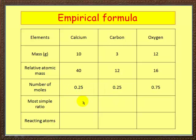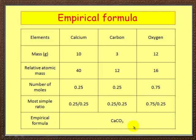Most simple ratio divided by the smallest. Either of those two do. So we've got 0.25 over 0.25, 0.25 over 0.25, 0.75 over 0.25. Work out the ratios - that must be 1, that must be 1, that must be 3. Let's see if I'm right. Look at that, spot on. So we've got 1 calcium, 1 carbon, 3 oxygens. So the empirical formula must be CaCO3.